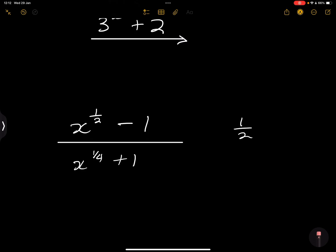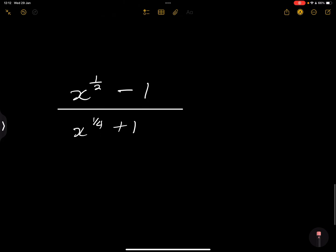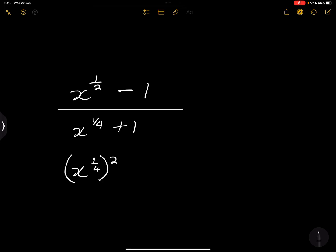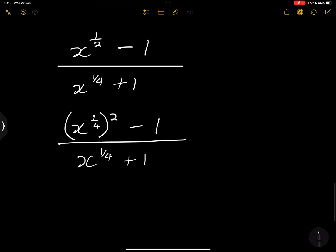Because in this case, we can write x^(1/4) squared, you remember we are raising a power to the power, with another exponent. So that's minus 1 divided by x to the power 1 over 4 plus 1. Now what we can do there, we can let x to the power 1 over 4 be equal to K.